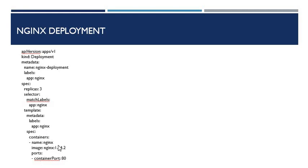And then in spec, it will create one container. The name is Nginx and the image, based on the image Nginx version 1.14.2. So that means each pod runs one container Nginx, which runs the Nginx image at version 1.14.2. And since it is Nginx, it will obviously run on port 80.